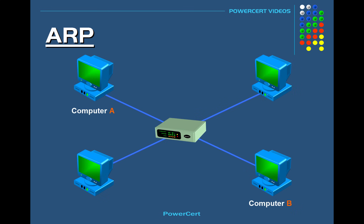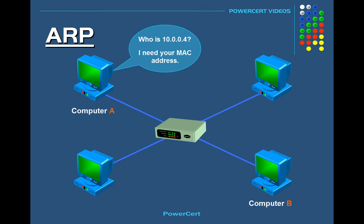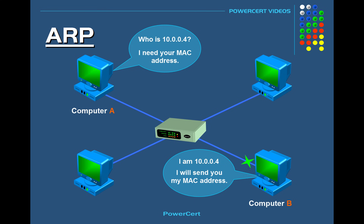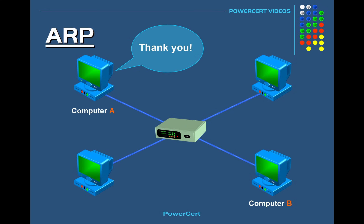Since the cache is empty, computer A will send out a broadcast message on the network asking every device which computer has the specific IP address and requesting their MAC address. The computer with the matching IP address will then respond back and tell computer A its MAC address. Once computer A receives the MAC address, communication can take place between the two.